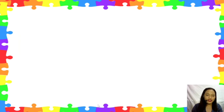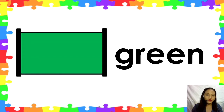Next color is green. Say green. Green begins with the consonant blend gr. Say it again, green.